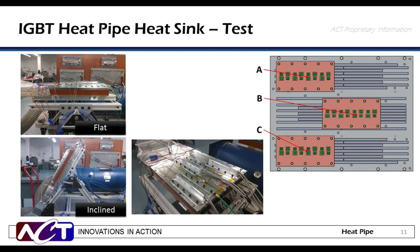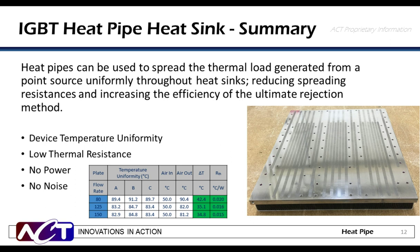Testing was performed in both flat and inclined orientations, with heater blocks attached to simulate the loads. In summary, heat pipes can be used to spread thermal loads generated from point sources on a heat sink uniformly throughout the base. This reduces spreading resistances and increases the efficiency of the ultimate rejection method — in this case, improving fin efficiencies drastically for the folded fin design. You get device temperature uniformity and low thermal resistance with no additional power or noise, and testing results confirmed we hit our goals.